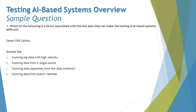We are talking about challenges related to test data that can make testing of AI systems difficult. Option A: sourcing big data with high velocity. This looks very common because big data was one of the common factors influencing test data and making testing difficult. Option B: sourcing data from a single source — that's not correct, because sourcing consistent data from multiple sources can be difficult, but a single source is simple and easy.